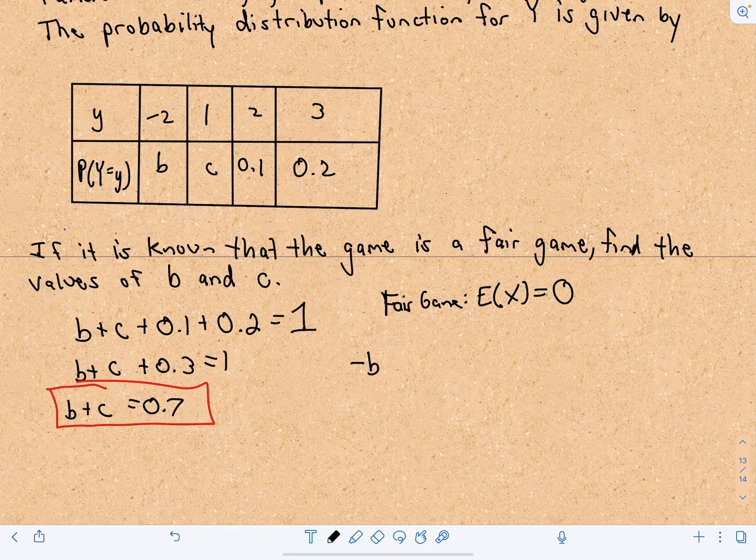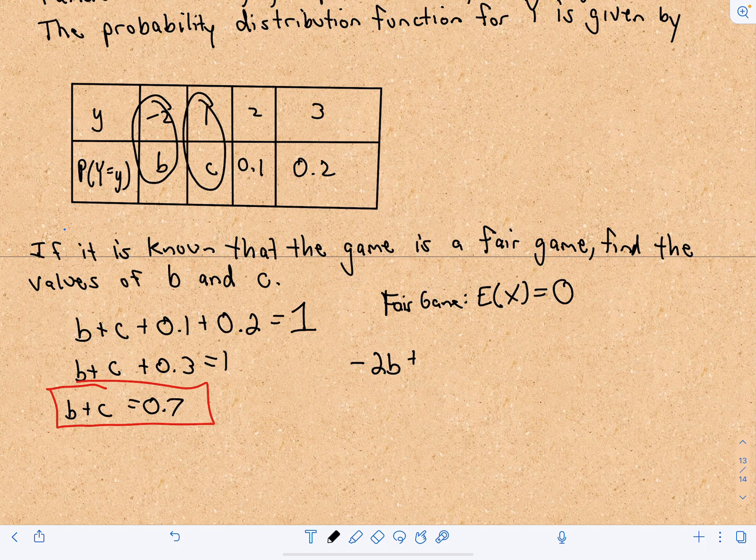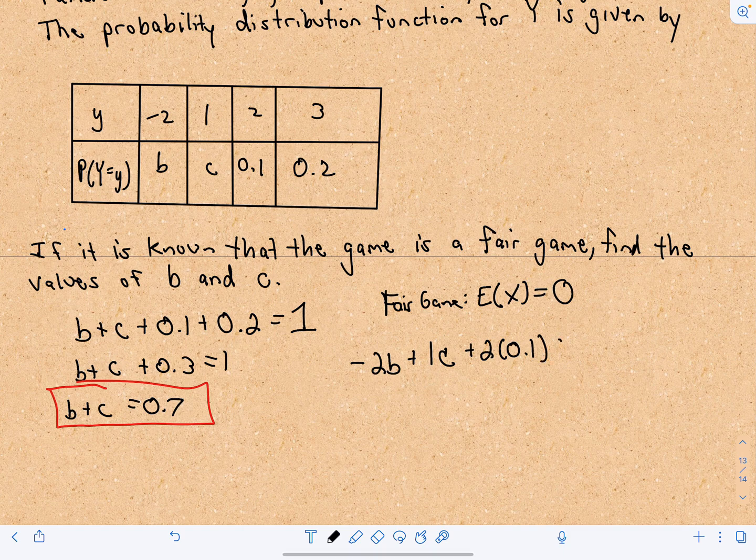But now we can create our second system of equations. We know negative 2B. So now I'm going to do expected value. I'm just multiplying these values together and adding them together just like I did a second ago. So negative 2B plus 1C plus 2 times 0.1 plus 3 times 0.2.